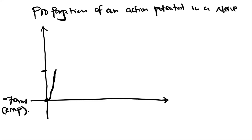Why does the membrane potential become less negative? The stimulus causes ligand-gated sodium channels to open. When ligand-gated sodium channels open, positively charged sodium enters the cell, making the inside less negative — slightly more positive. When the membrane potential reaches negative 55 millivolts, an action potential will be propagated.